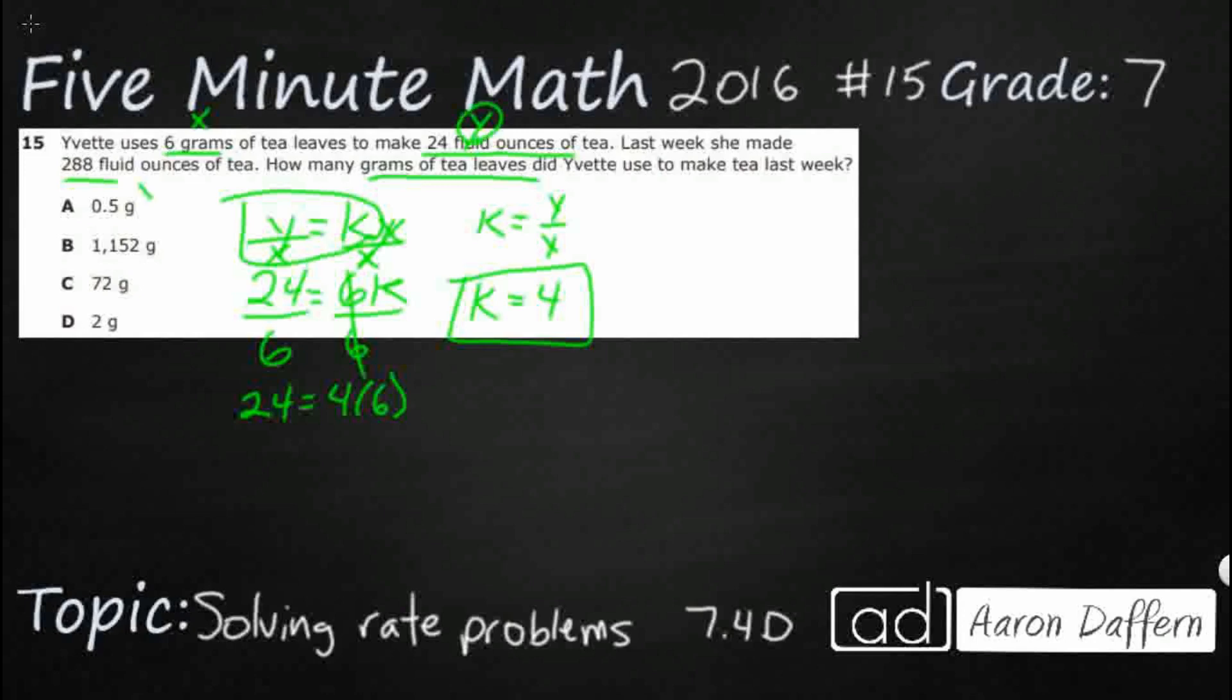So my fluid ounces of tea, remember, is my dependent variable. So I'm going to put that over here as Y. So I'm going to say 288 equals KX. Well, I know my K is 4. My X is how many grams of tea leaves. That's my X like it was right here, 4X.